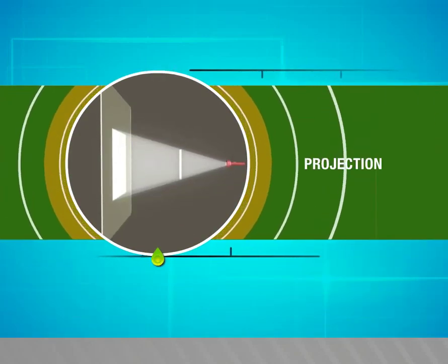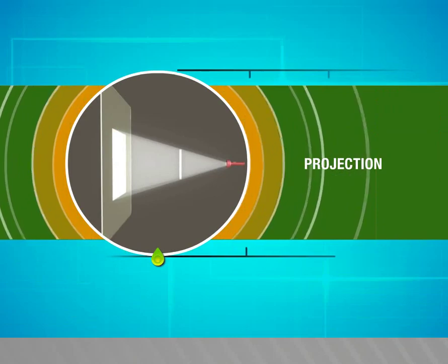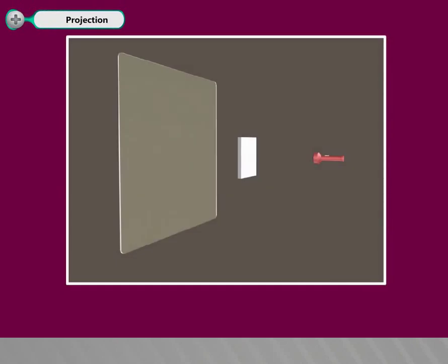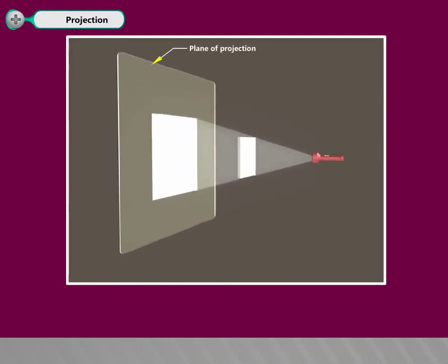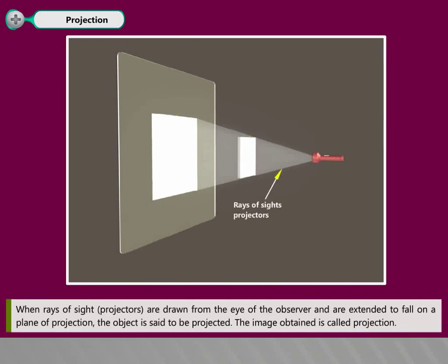In this video we are going to see about what is projection. When rays of sight, i.e. projectors, are drawn from the eye of the observer and extended to fall on a plane of projection, the object is said to be projected. The image obtained is called projection.